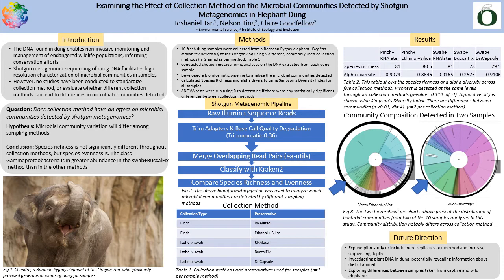I successfully classified reads from all the samples, from 12.84% to 51.81% of reads classifying to the species level. Looking at the results in Table 2, you can see species richness and evenness, where the pinch in RNA later and swab in RNA later methods had the most richness in terms of classes that were detected, while the swab in vehicle fix method had the least. An ANOVA test showed that there was no statistical difference between the mean number of classes detected by the methods. Alpha diversity is shown in the same table; the swab and vehicle fix method had a much lower value compared to the rest. The ANOVA test showed that there was an extreme statistical difference between the species evenness detected.